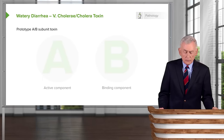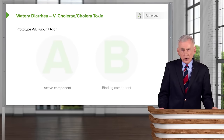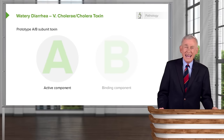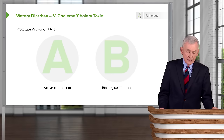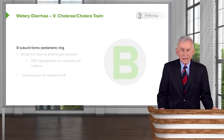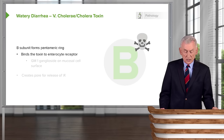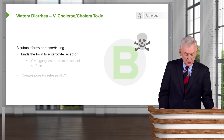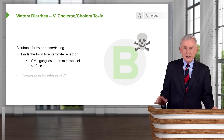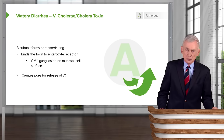Let's talk about cholera caused by Vibrio cholerae, the prototype of watery diarrhea. It has a prototypic AB toxin. The A subunit causes the disease; the B subunit binds the toxin to the GI epithelium. The B subunit forms a pentameric ring and binds the toxin to an enterocyte receptor — a GM1 ganglioside on the mucosal cell surface — and forms a pore in the cell, allowing the active toxin component to enter.